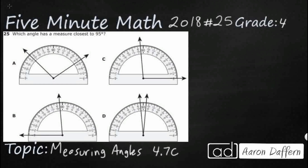So we have four different angles here and we are using a protractor. Protractors are the tools that we use to measure angles, just like we use a ruler to measure length. We need to find the angle that is closest to 95 degrees, so let's anchor ourselves in what we know about angles.